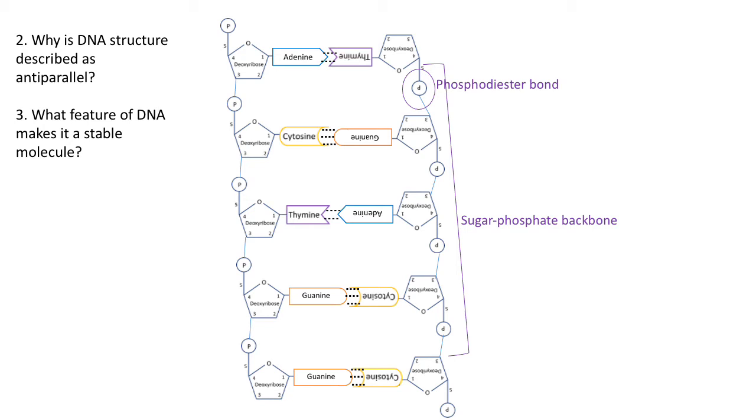That sugar-phosphate backbone forms almost like a barrier to the internal structure, those nitrogen-containing organic bases that sit in the middle of the DNA structure. Remember, they're really important because they are the genetic information. It protects those bases from any damage, so it's that sugar-phosphate backbone that makes DNA a stable molecule.